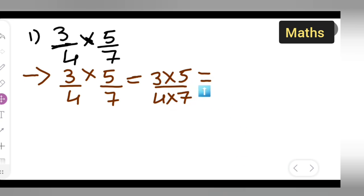3 times 5 equals 15. Multiply the numerators: 3 times 5 is 15. Then for the denominator, 4 times 7 gives you 28.